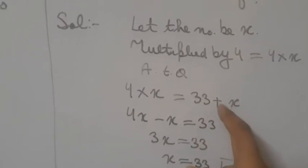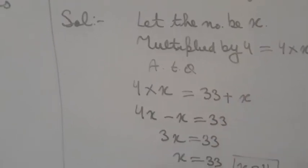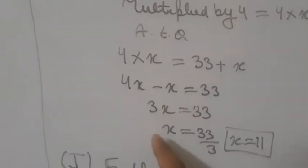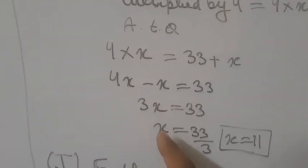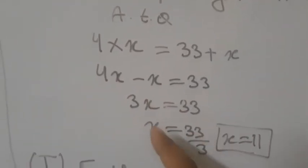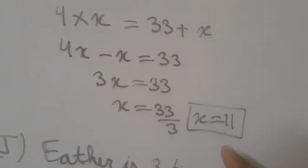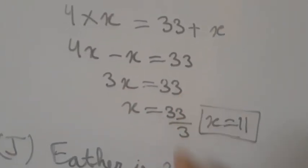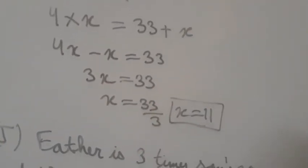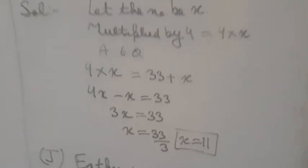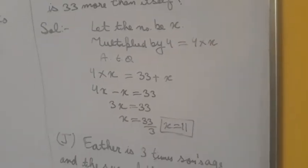Bringing x to the left-hand side: 4x minus x = 3x = 33. Dividing 33 by 3, the answer is x = 11.